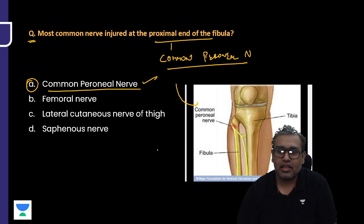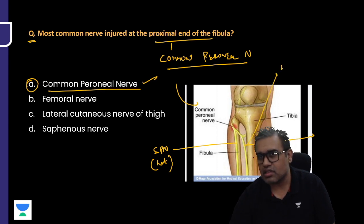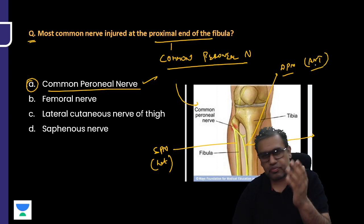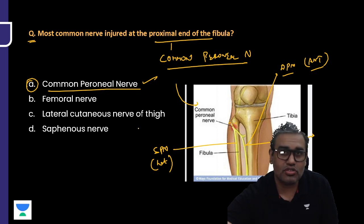It winds around the neck of fibula and divides into two branches. One is the superficial peroneal nerve which supplies the lateral compartment of the leg. The other goes deeper anteriorly, that is the deep peroneal nerve which supplies the anterior compartment of the leg and helps in dorsiflexion. The lateral compartment helps in eversion. This nerve being so close to the surface, just between skin and bone, and being on the outside lateral part, is more prone for injury.